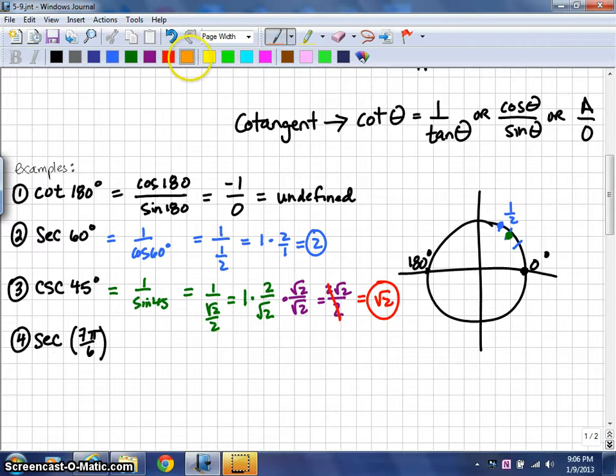And our final problem that we're going to do is the secant of 7 pi over 6. If you're working with a problem that has a value that's in radians as opposed to degrees like we have on the previous questions, you'll need to either know where that's located or convert it to degrees as necessary.